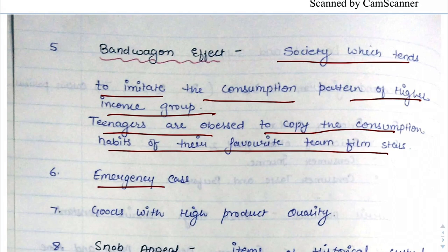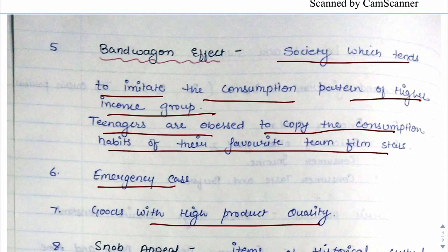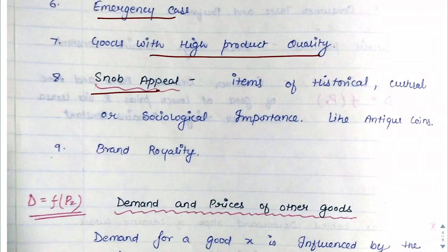Next is the emergency case. If there is any type of medicine or injection that is expensive during an emergency like a virus outbreak, we will still buy it. In those emergency cases, the law of demand fails. Next is goods with higher product quality — if quality is very good, it will obviously cost more and demand will also be more. Next is snob appeal — antique items always become more expensive over time, so the law of demand also fails there.